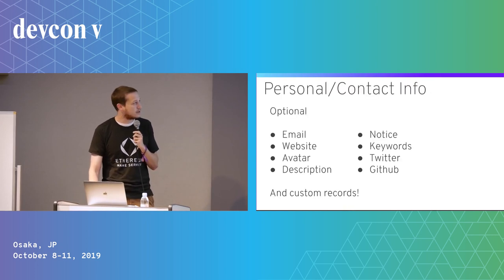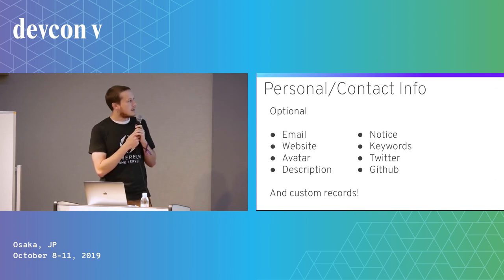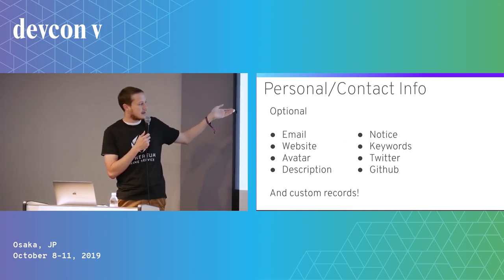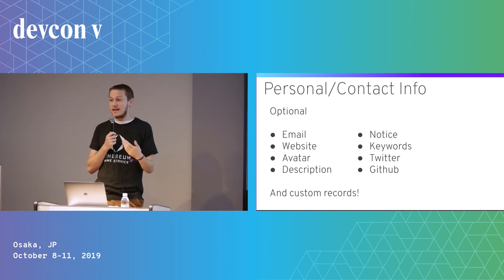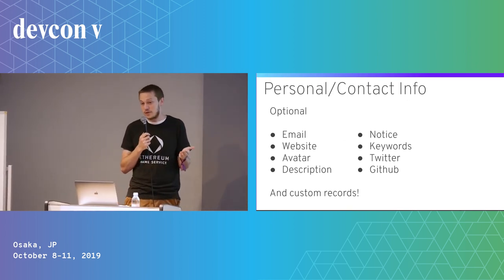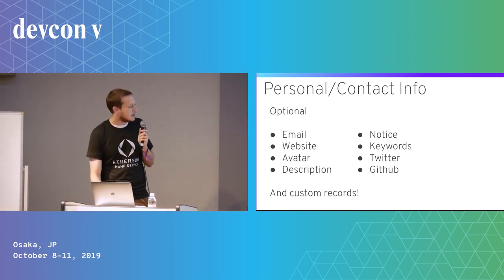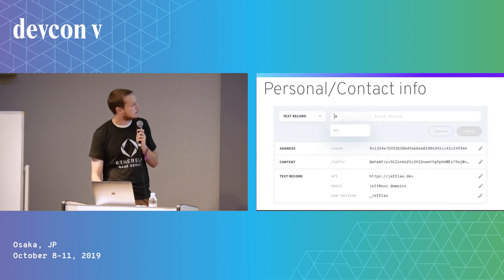We just launched a WHOIS-style feature with text records in our manager. You can now add to any ENS name: an email address, website, a link to an avatar, a description — anything you want. We're also going to be adding the ability to put custom text records very soon.